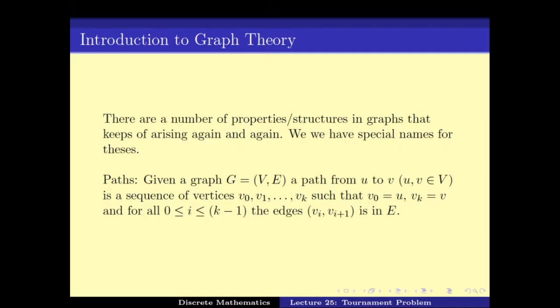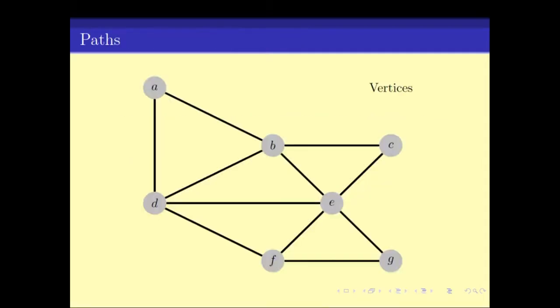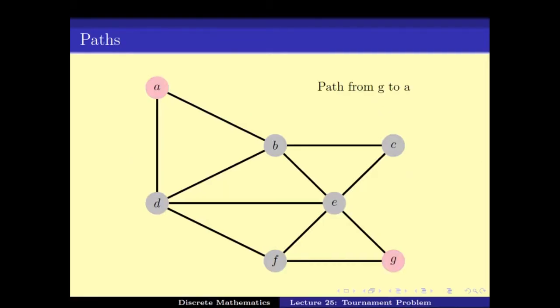A path from u to v is a sequence of vertices v0, v1, ..., vk where the first vertex v0 is u and the last vertex vk is v, and there is an edge between vi and vi+1. For example, a path from g to a could be g, f, d, a. In a graph one can have multiple paths — for example, g, e, b, d, a is also a path.